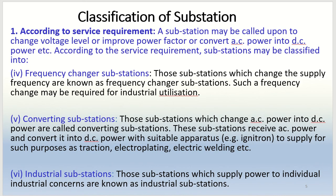Next, also according to the service requirement, there can be frequency change substations, converting substations, and industrial substations. Frequency change substations are those which change the supply frequency. For example, such a frequency change may be required for industrial utilization. Generally all supply frequency in India is 50 Hz, but there might be special applications requiring a higher frequency, and a substation of this kind may be used for that.